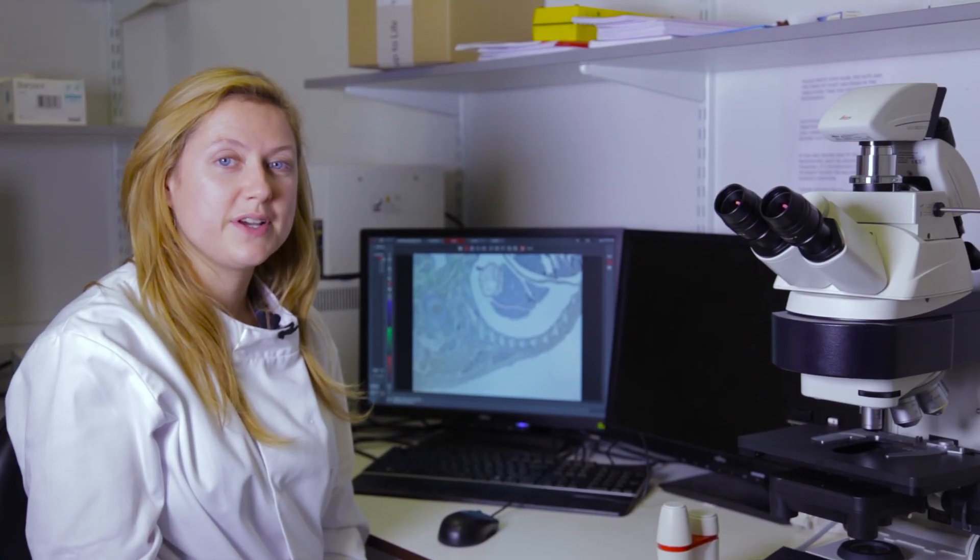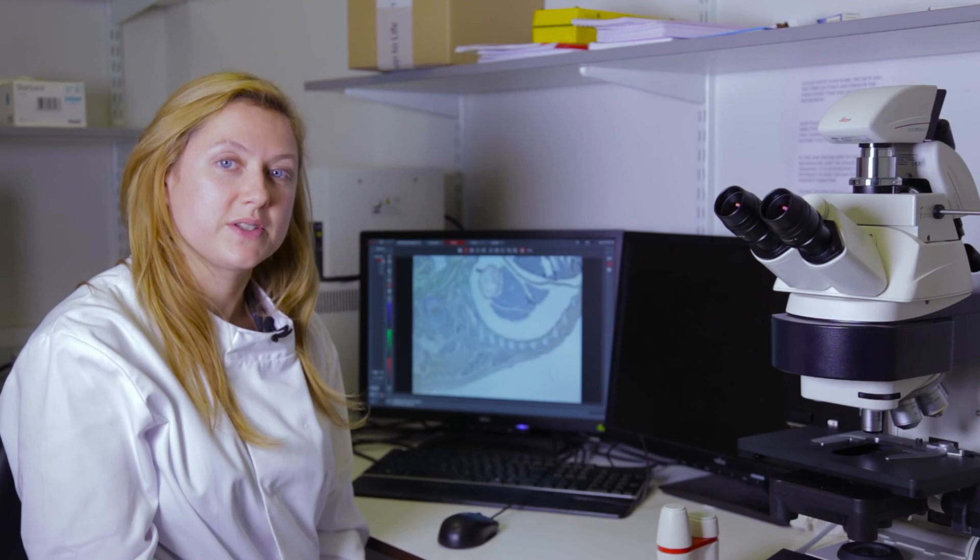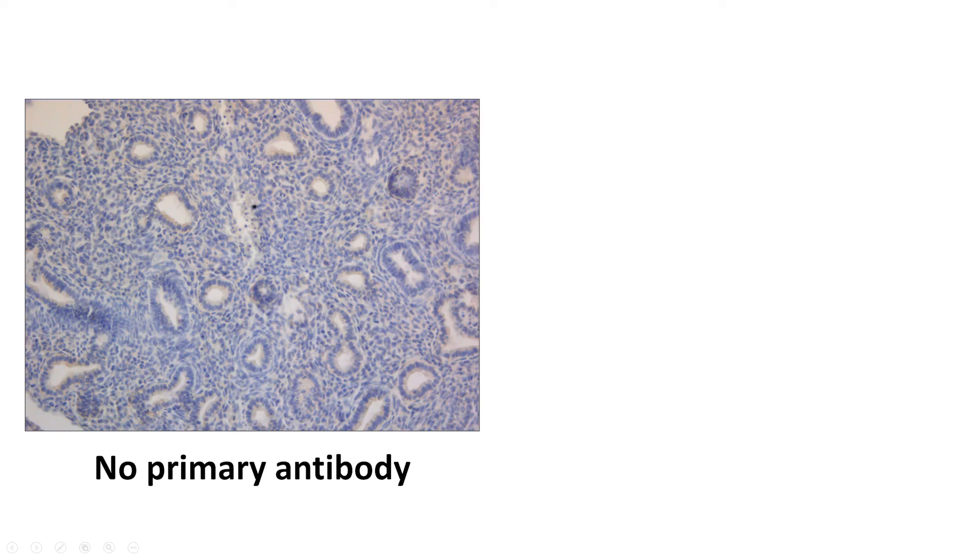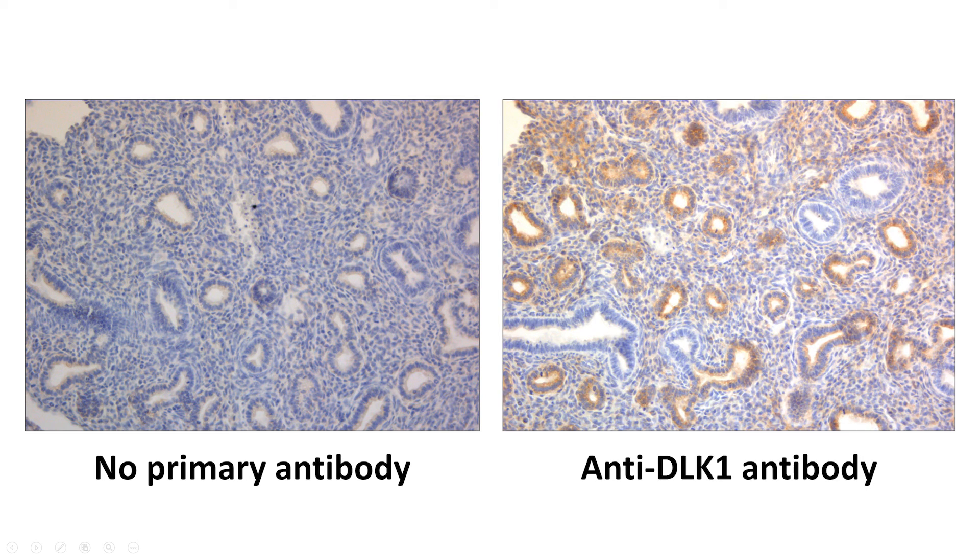Once the slides have been left overnight to dry, they can be viewed using a microscope. Here you can see the negative control, which has no brown staining as it had no primary antibody added to it. Next to it, you can see the experimental slide, which does have brown staining in the places that DLK1 is expressed. Both slides have blue staining from the haematoxylin counter stain.